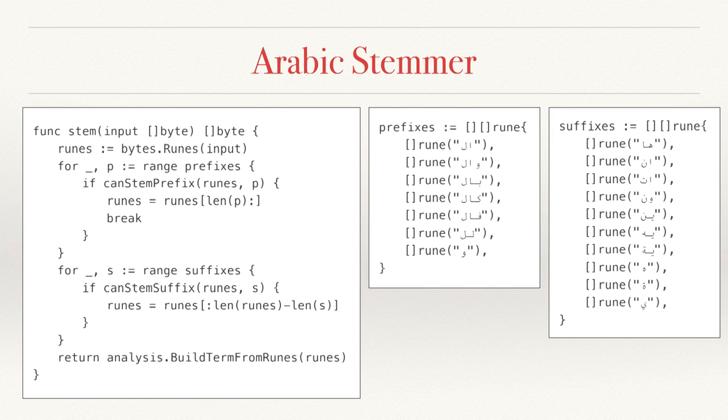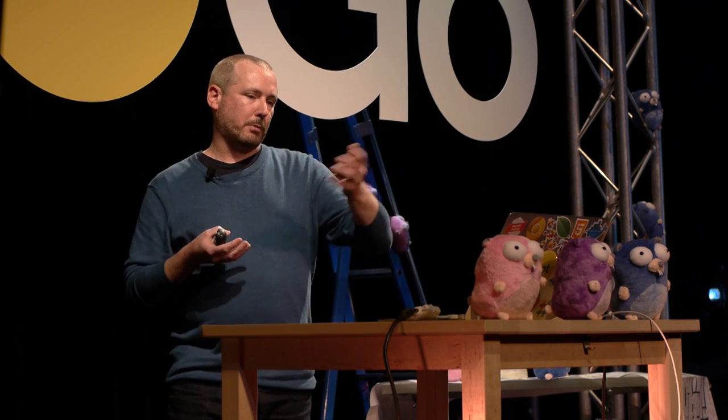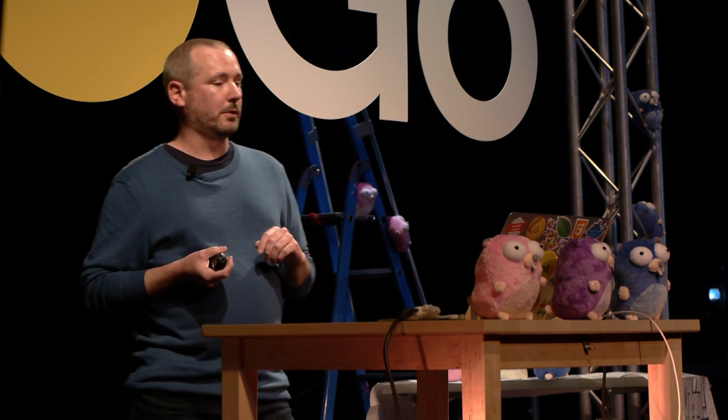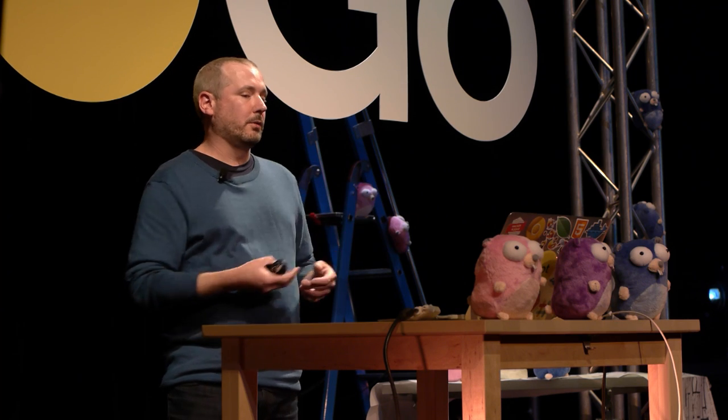Let's go one level deeper and look inside the stemmer. I have the one method, stem, which is really where most of the work is done — this is responsible for stemming the bytes within a single token. The first step is we take the bytes and turn them into runes, because the transformations we're making — the prefixes and suffixes — are defined in terms of Unicode runes and not in terms of the actual UTF-8 byte sequence. So we do that conversion, range through the characters, make the transformation, and ultimately turn them back into bytes for the next step in the pipeline. This is what I would call a light stemmer, where you're just doing exact matches on prefixes and suffixes.